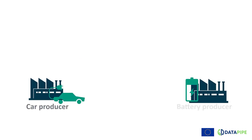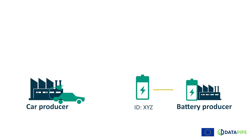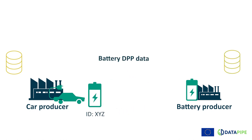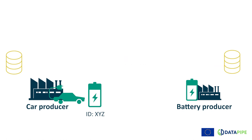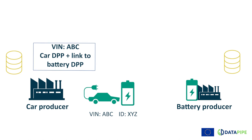The imaginary scenario runs as follows. When producing a specific car, the car company orders a battery. The battery producer issues an identifier for that battery and at the same time publishes the DPP data on its system. This data then becomes accessible, via a weblink, to anyone with the correct authorizations. The battery producer sends both the battery and the link to the battery DPP to the car producer. The car manufacturer produces a new car, identified by a specific VIN number, using that battery. In our scenario, the car producer decides to create a car DPP that contains the link to the battery DPP.